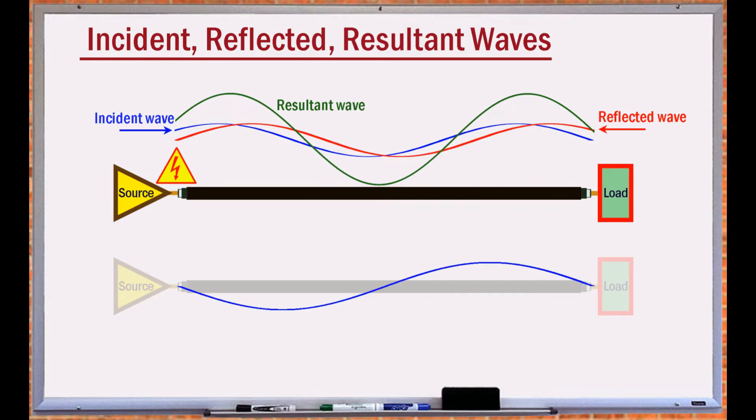At certain frequencies, the reflected wave interferes constructively with the signal. The resultant signal is referred to as a standing wave.